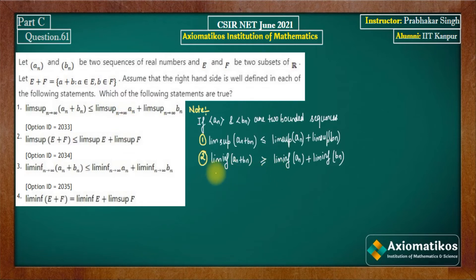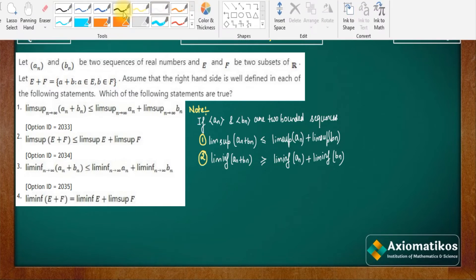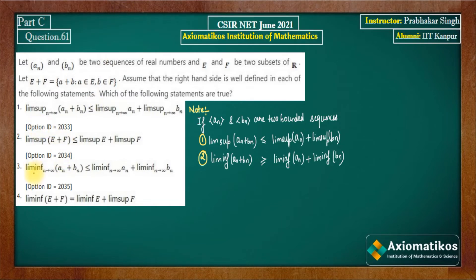These are the two notes with whose help we are going to solve this question, since options 2 and 4 will not be solved — only first and third. The result states: LIMSUP of (An + Bn) is less than or equal to LIMSUP of An plus LIMSUP of Bn. This is actually correct. We have written this result for bounded sequences, because for a bounded sequence it becomes very easy to prove.